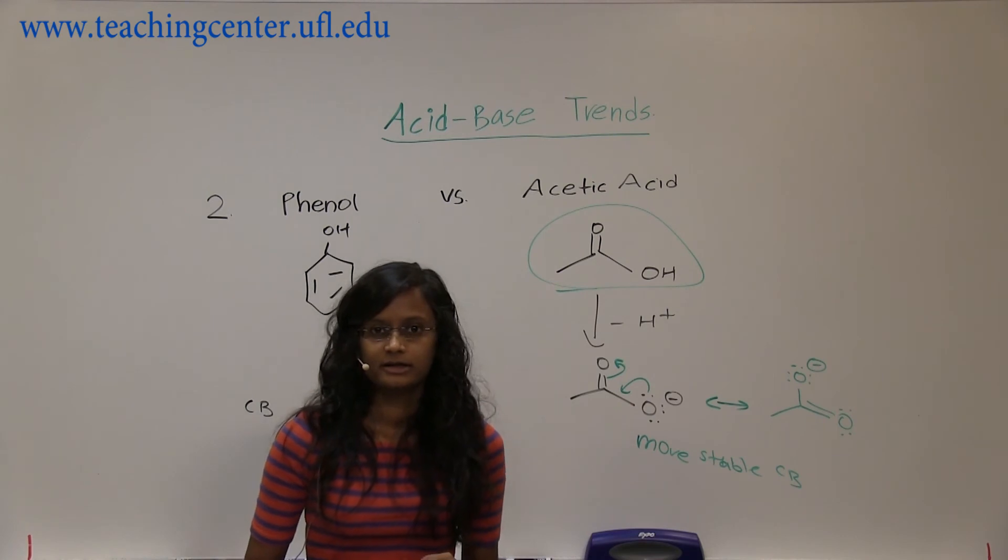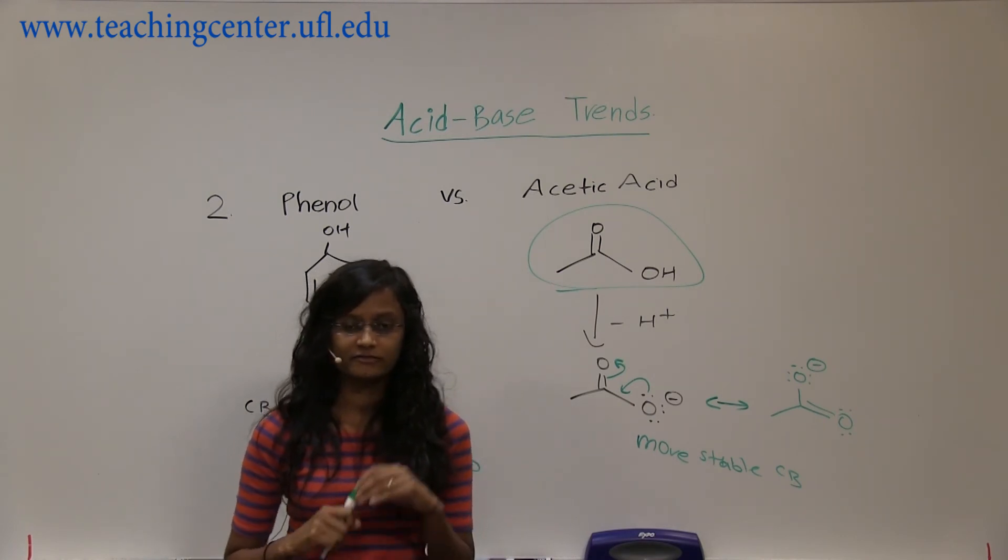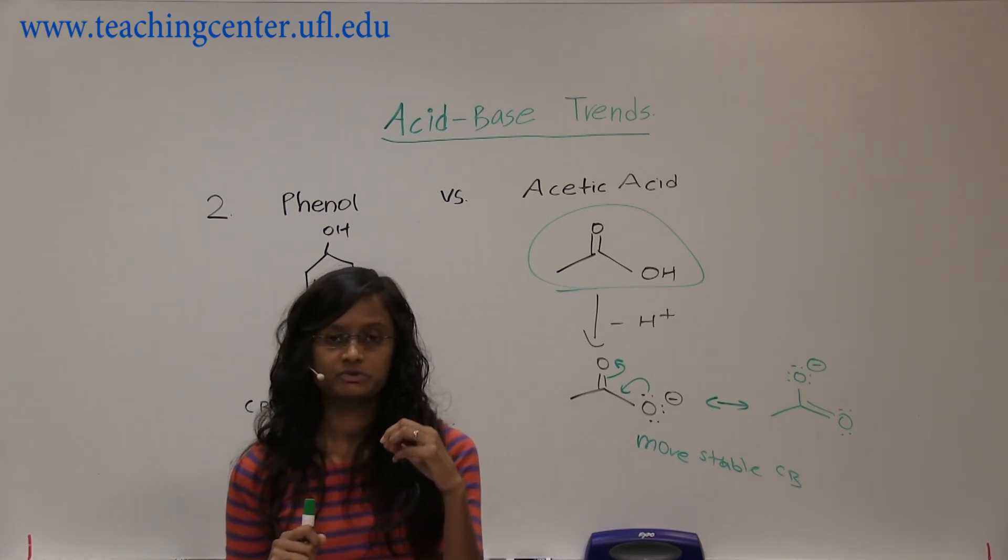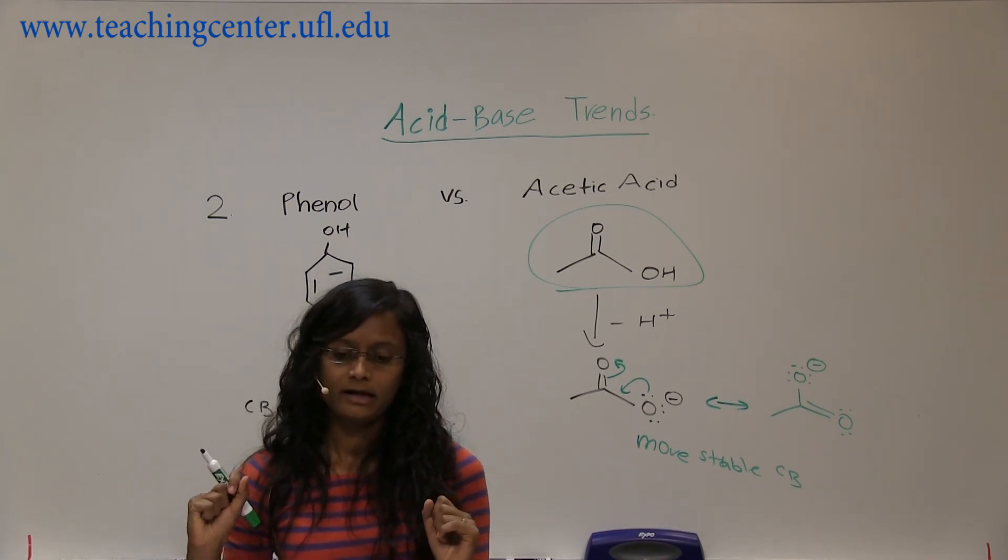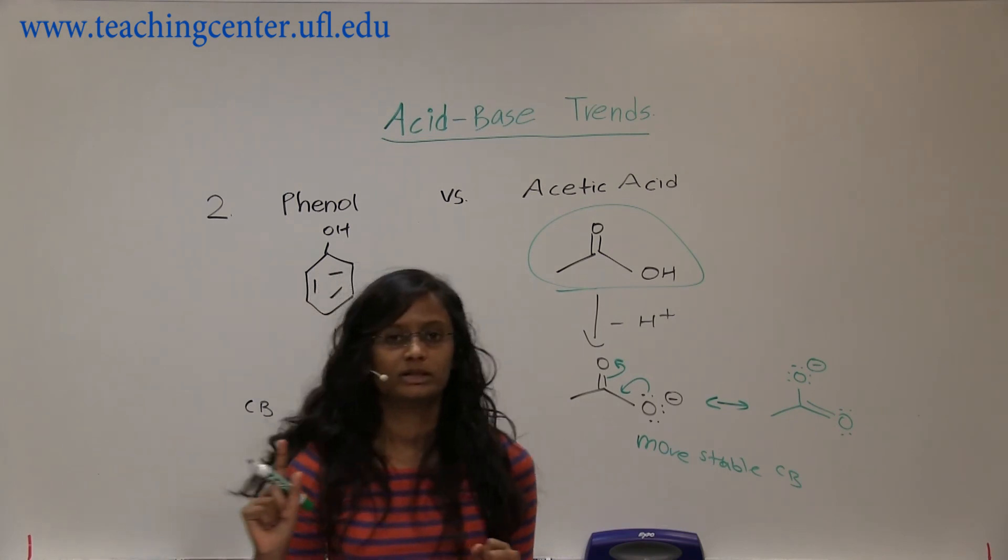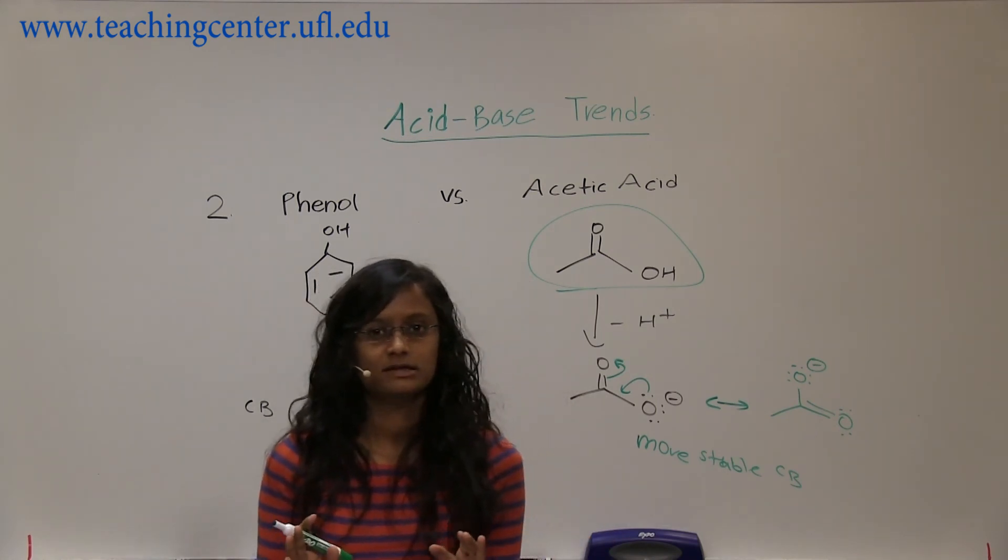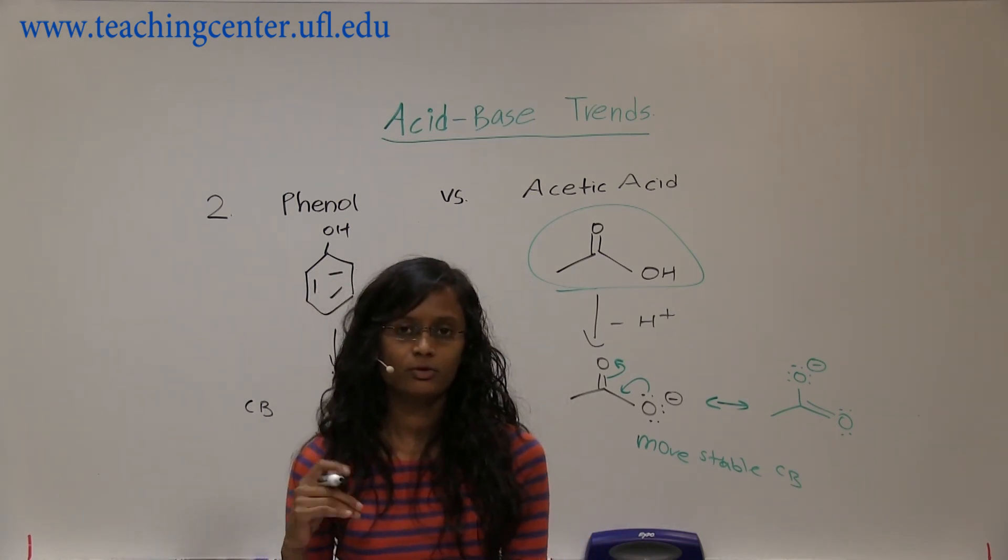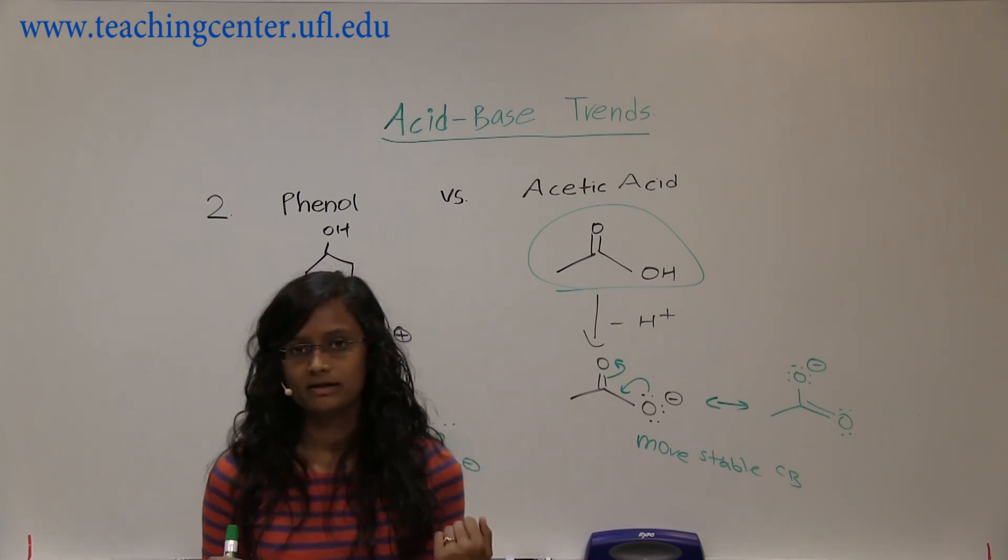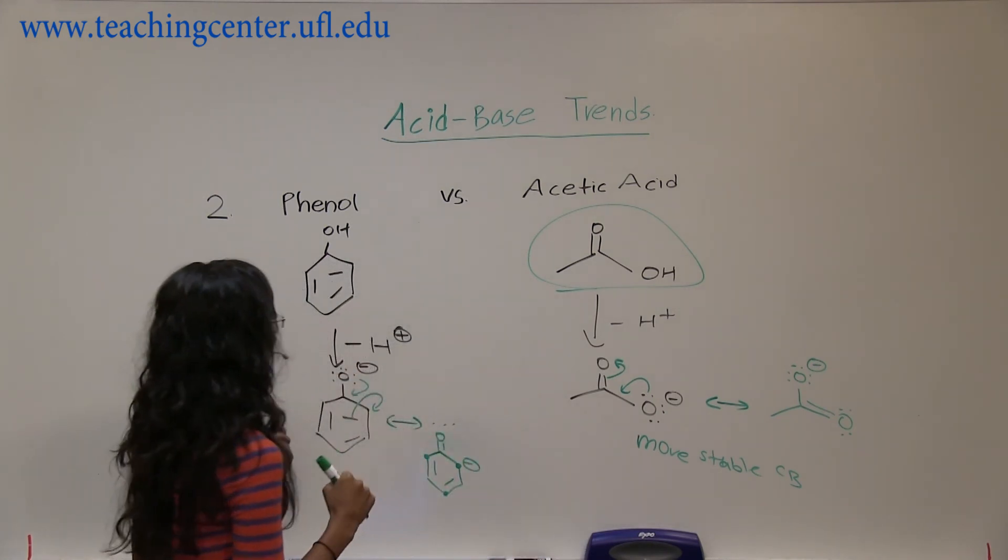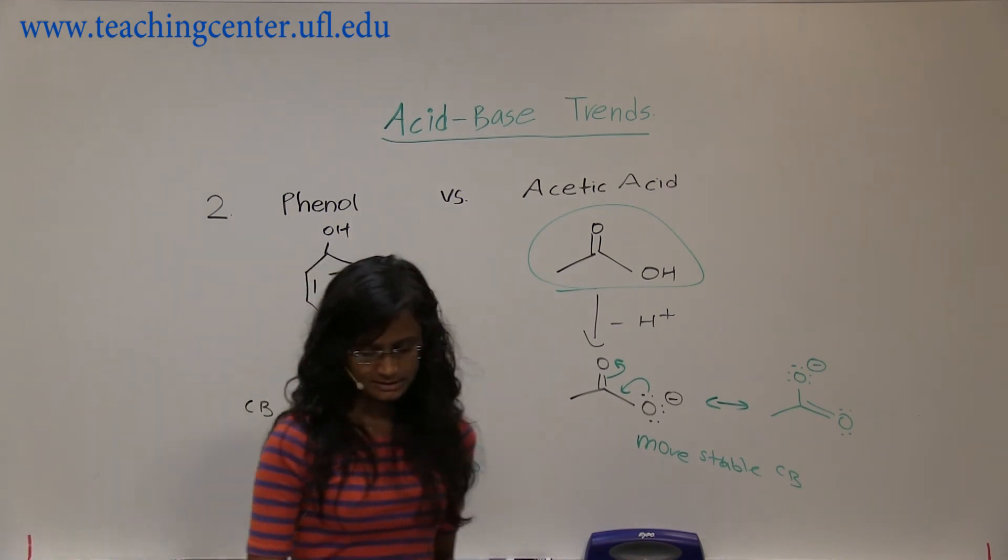Alright, that means this is the more stable conjugate base, so the stronger acid is the acetic acid. Alright, so keep in mind: the first example was where we did resonance versus no resonance and the resonance one won. This example, we did both have resonance—one has more, one has less—we evaluated the quality and then came up with the answer. Alright, so this is number two.